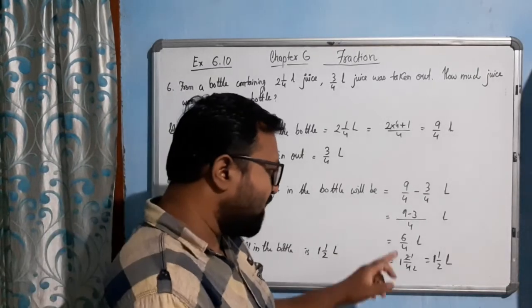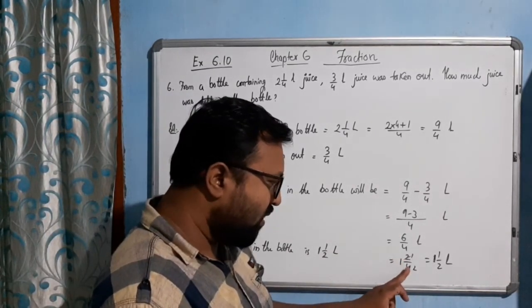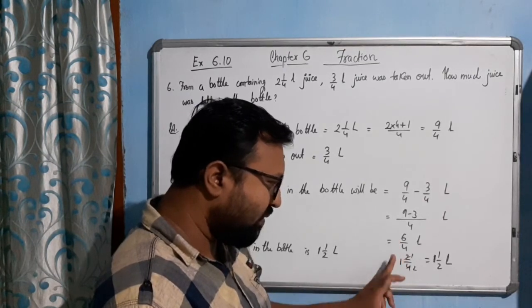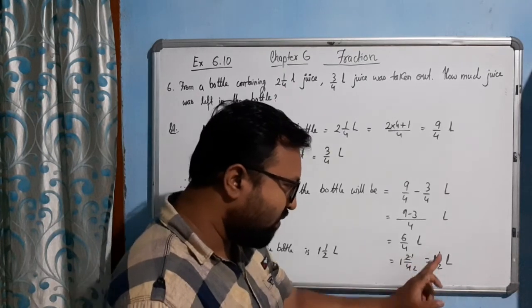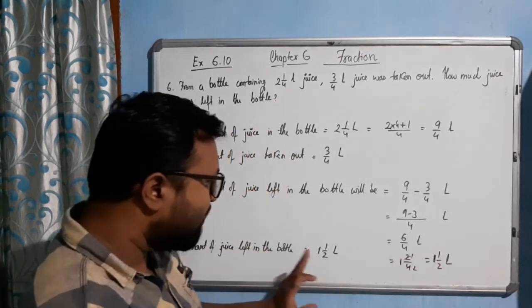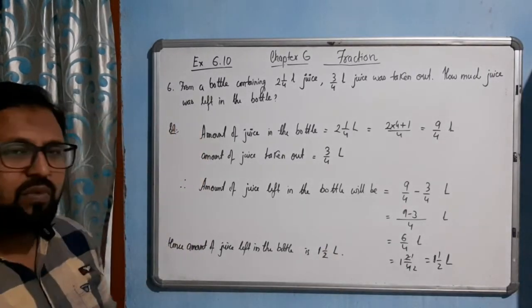See, this 6 by 4, if we convert this to mixed fraction, it will be 1 2 by 4. 4 ones of 4 plus 2 is 6 by 4, and this 2 by 4 is cancelled out, 2 by 4 is 1 by 2, that is 1 and half liter. So 1 and half liter of juice will be left behind in the bottle.